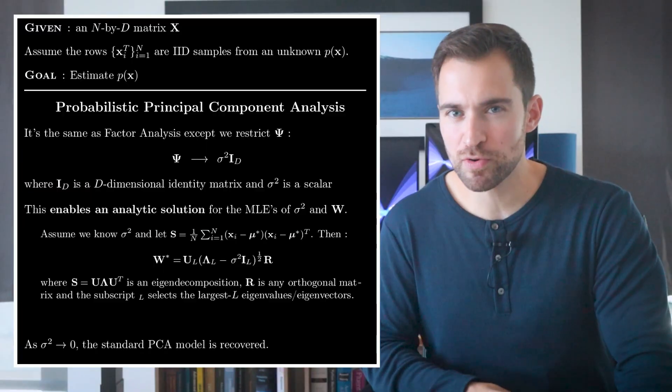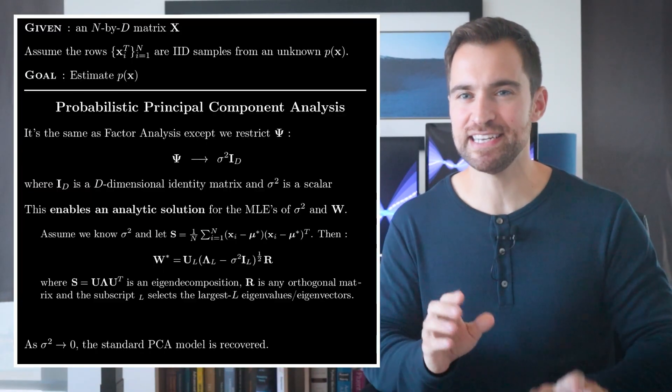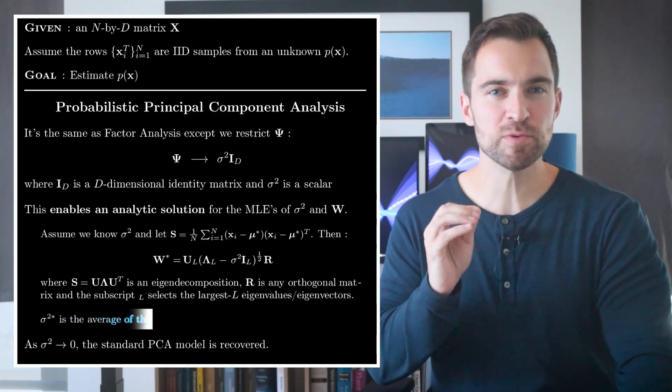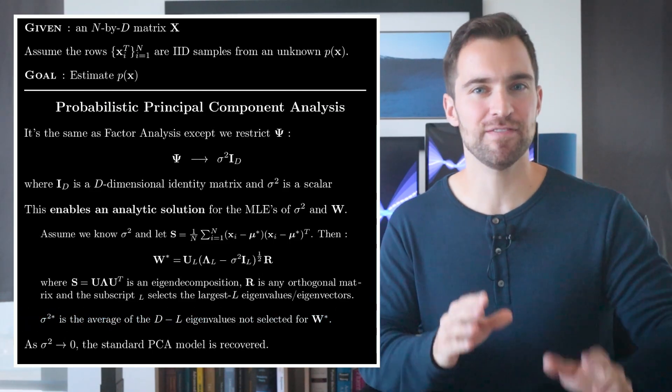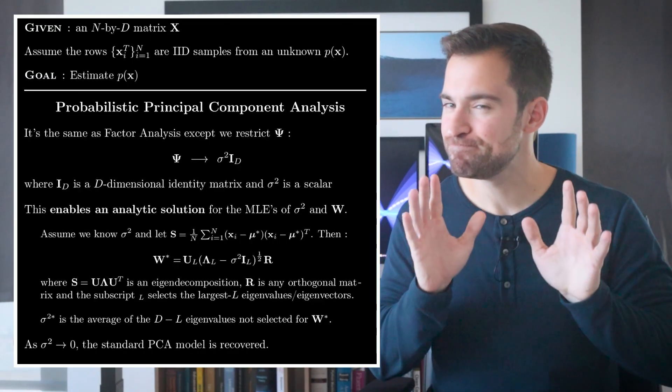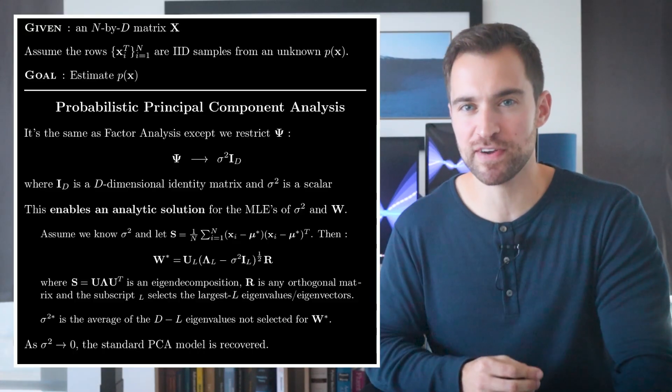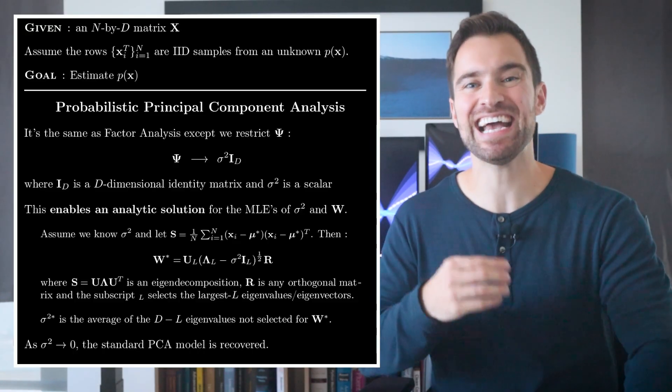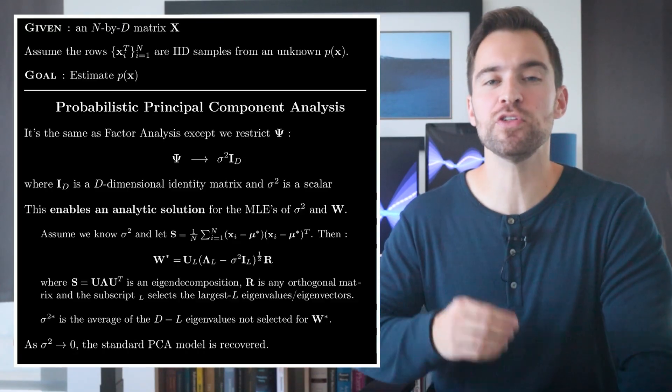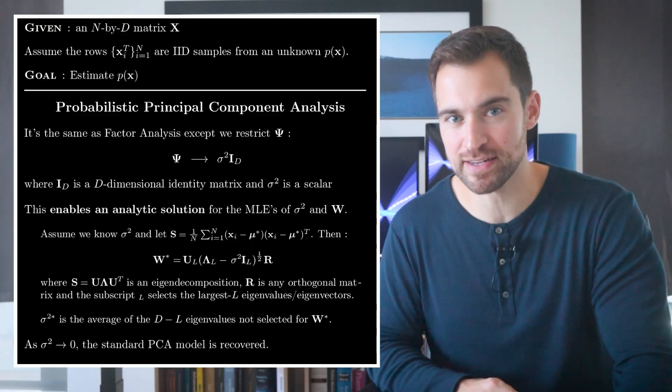And probabilistic PCA also makes it easy to get that optimal value. It turns out the optimal noise variance is the average of the d minus l smallest eigenvalues not selected for w. This isn't terribly surprising. Our model wants to explain all of the variances in x, all of which is represented in the eigenvalues of s. Well, w will handle the largest l of these. So, it's not unreasonable to say sigma is just the average of what remains.